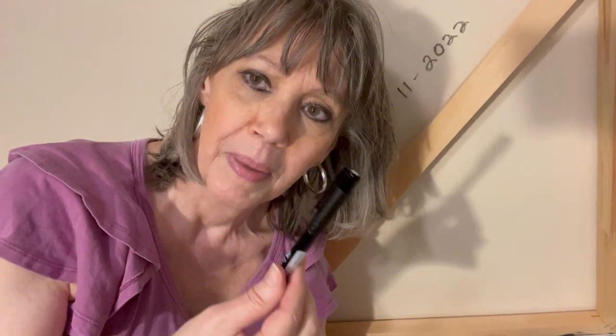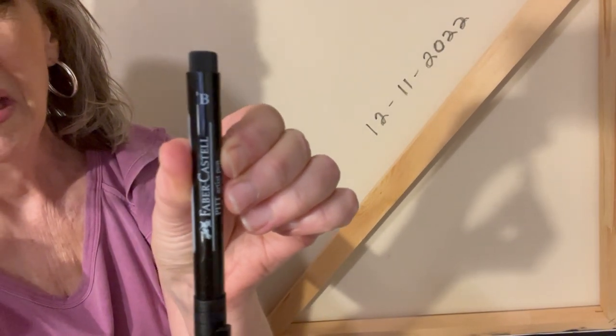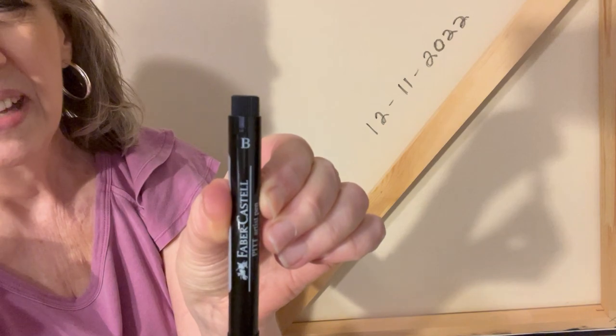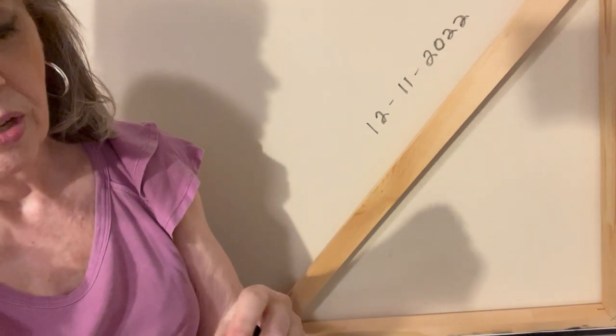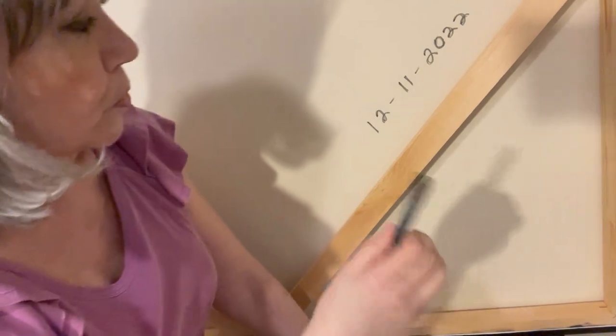Hi, I'm Naomi with the Naomi Butler Show, and I'm going to show you today how I use a pit pen to sign the back of my paintings. I use the one that has the B, because that's for bold. There's fine, there's medium, there's bold, but I use bold for the back of the painting.